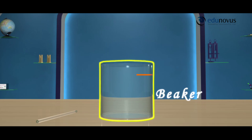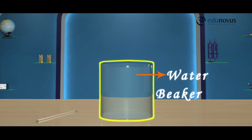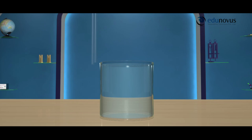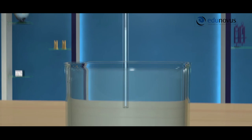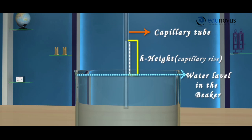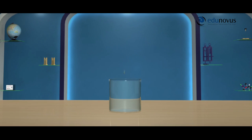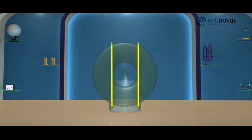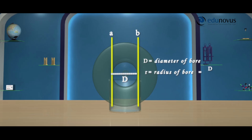Take a beaker containing water. When you dip a capillary tube in the water vertically, the water level rises in the capillary tube above the water level in the beaker and remains constant due to capillarity. Let h be the height of the capillary rise, d be the diameter of the capillary tube, and half of the diameter gives the radius r of the capillary tube.